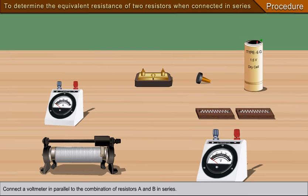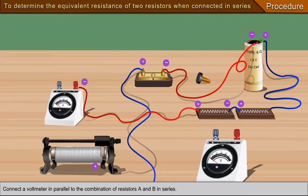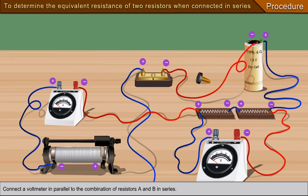Connect a voltmeter in parallel to the combination of resistors A and B in series.